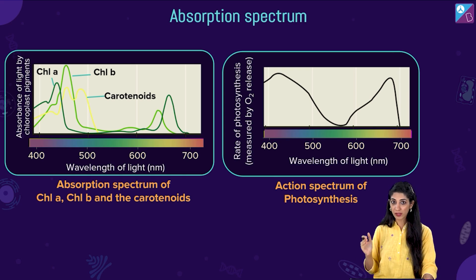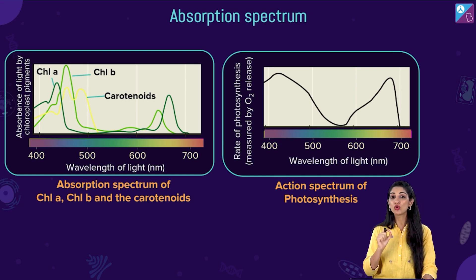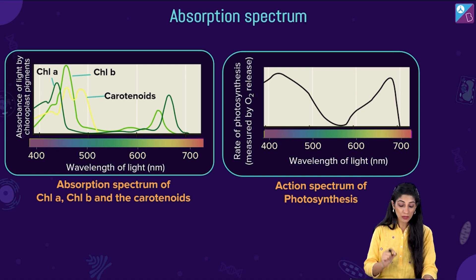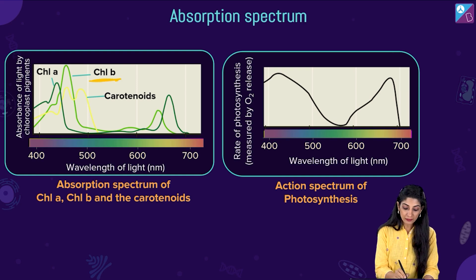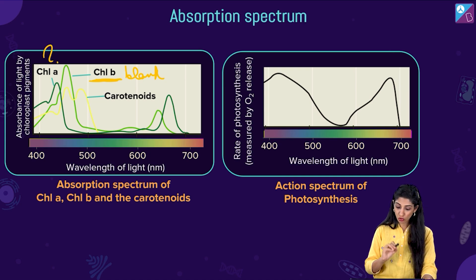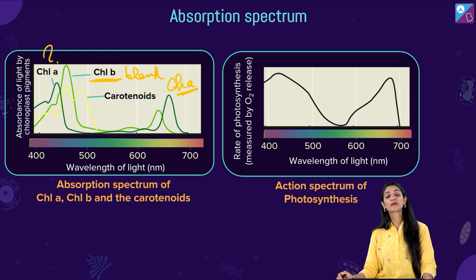When we plot the absorption spectrum graph, the x-axis has the wavelength of light and the y-axis has absorption of light by the chlorophyll pigments. You will see that in the blue-violet region and the red region, absorption of light is maximum for both chlorophyll A and B. In the blue and violet region, chlorophyll B absorption is more than A, but in the red region, chlorophyll A absorption is more than B.